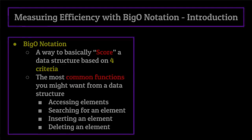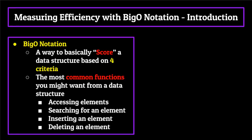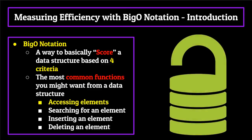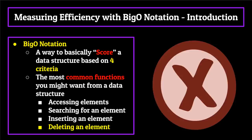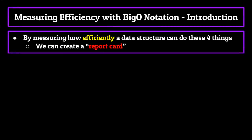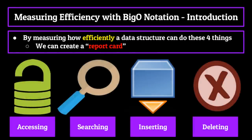Programmers have developed this idea of big O notation as a way to basically score a data structure based on a few different criteria. For the purposes of this video, we will be using four criteria representing the most common functions you might want from a data structure: the ability to access a specific element within the data structure, search for a particular element, insert an element, and remove an element. By measuring how efficiently a certain data structure can do these four things, we can basically create a report card of sorts, which measures how efficient a certain data structure is. At a glance, this gives us a pretty good overview of what a certain data structure is good at and what it is bad at, and it can help us decide which one to use.